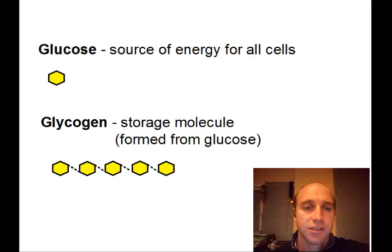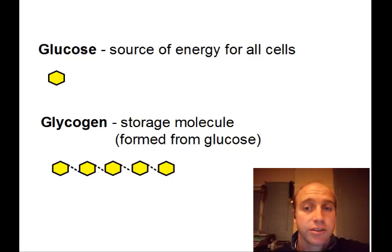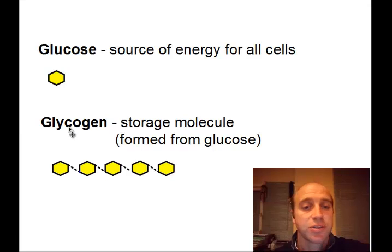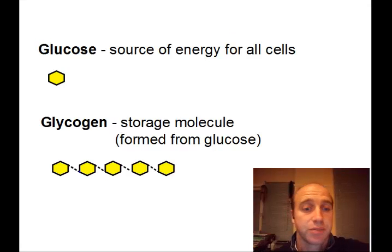Let's look at two main molecules here, and it's the start of many words that start with G. Glucose, which we've just introduced, is a source of energy for all cells through cellular respiration. And glycogen, which is our storage molecule in animals — in plants that's stored as starch — and it's basically made of a number of glucose molecules being joined together.